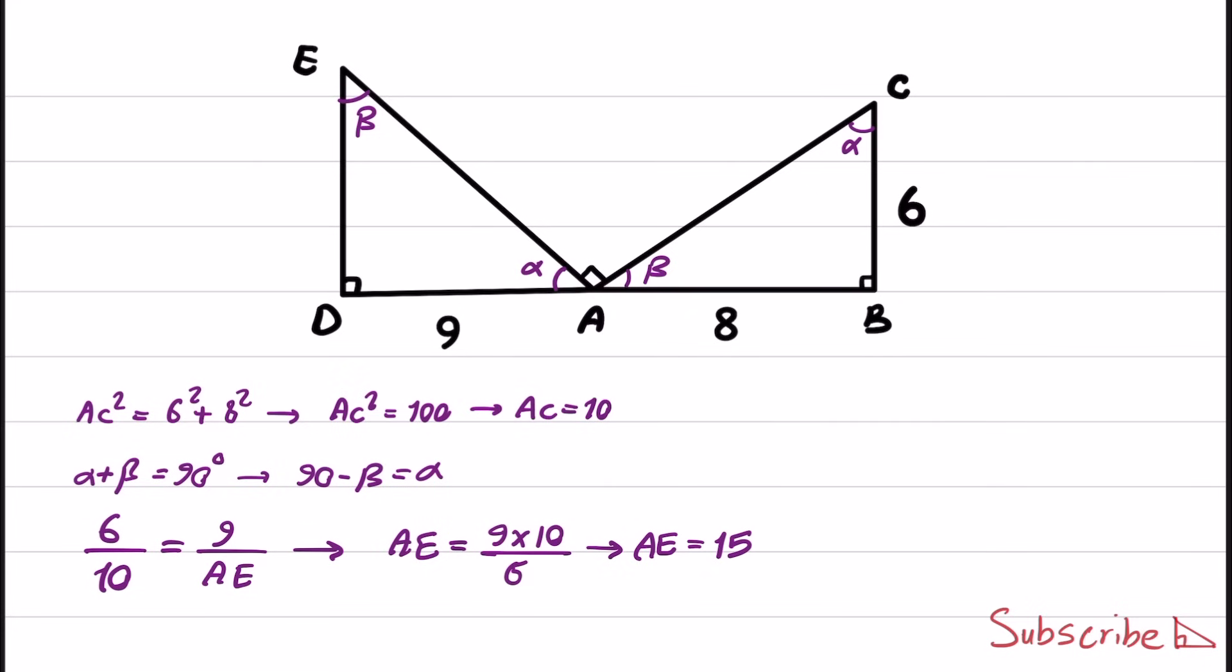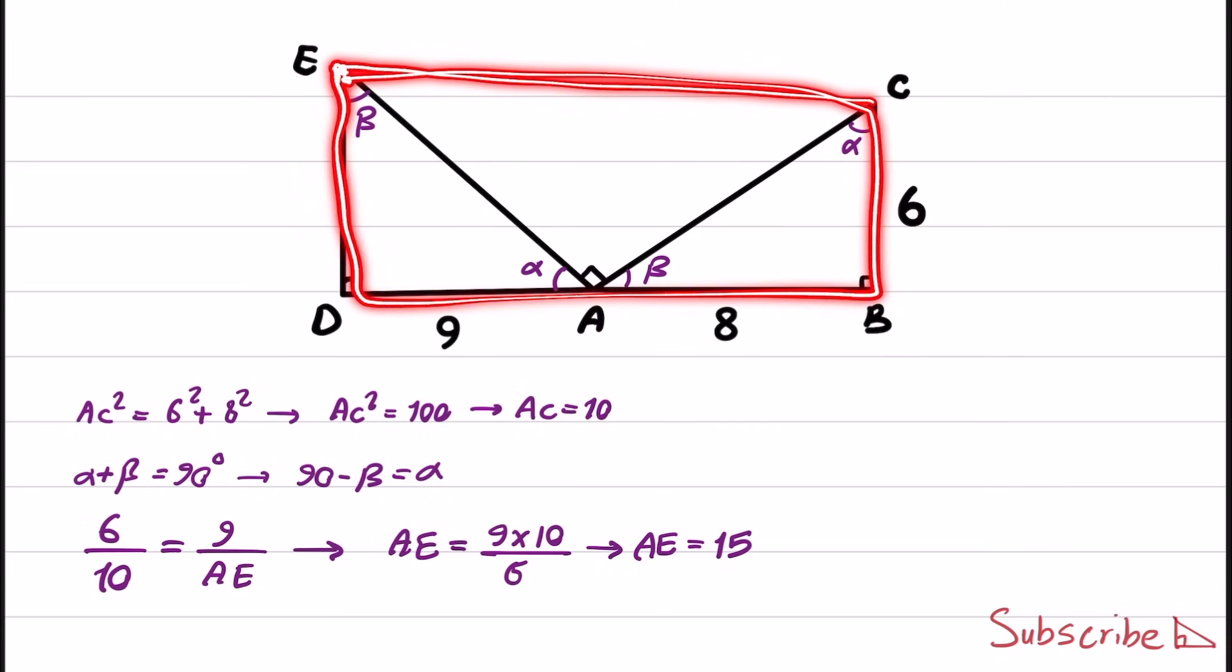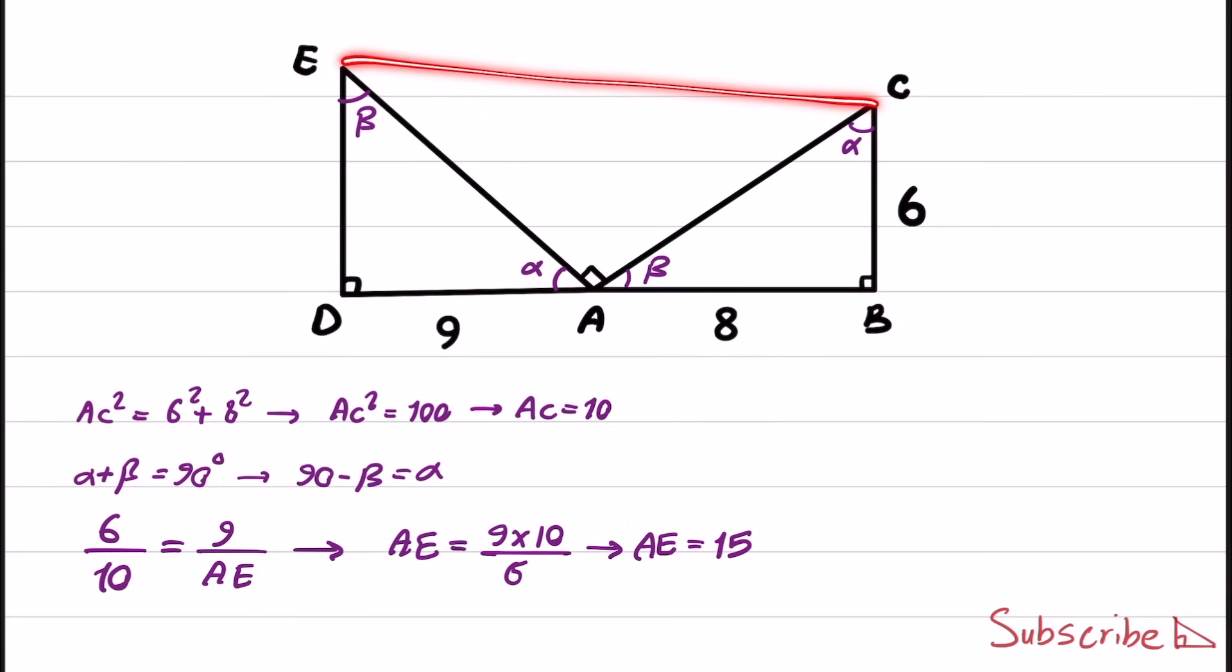There is a common mistake that students make where they connect C to E and assume that the length of CE is 17, which is not the case here, because this shape is not a rectangle. So if you use that solution, you will end up with the wrong number.